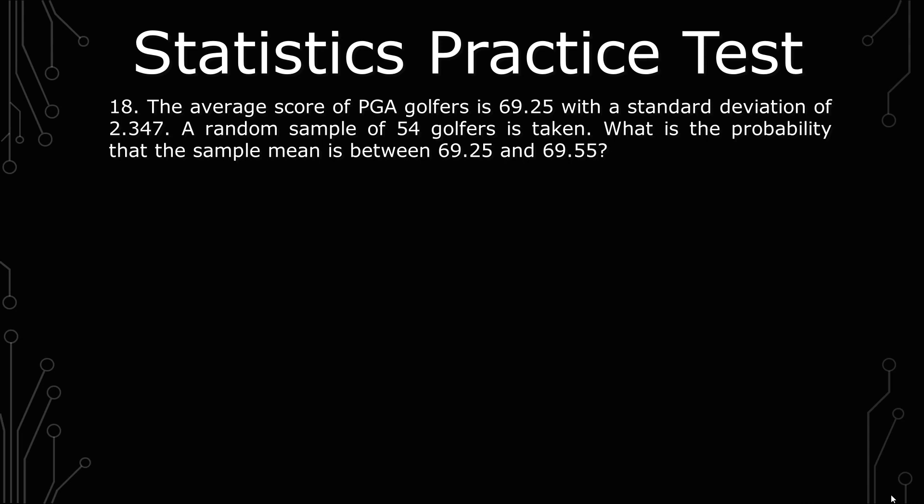The question states: the average score of PGA golfers is 69.25 with a standard deviation of 2.347. A random sample of 54 golfers is taken. What is the probability that the sample mean is between 69.25 and 69.55?